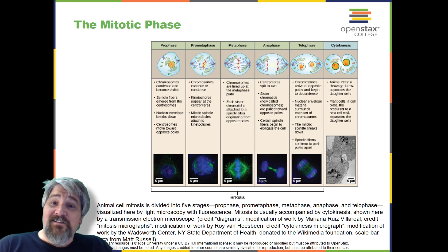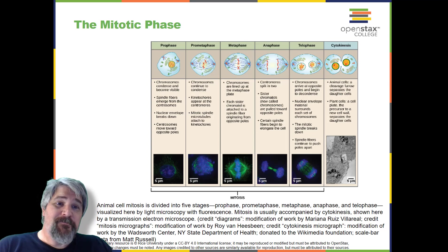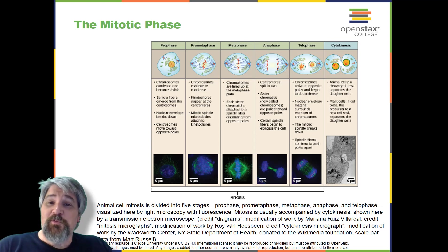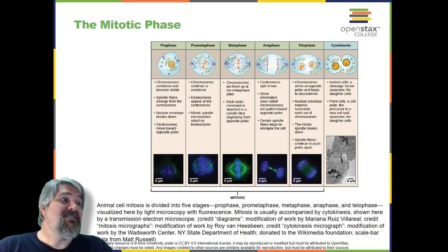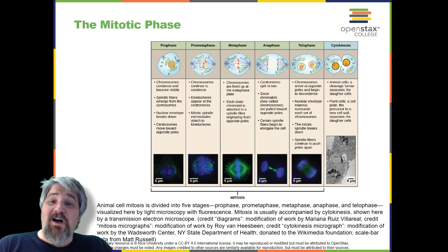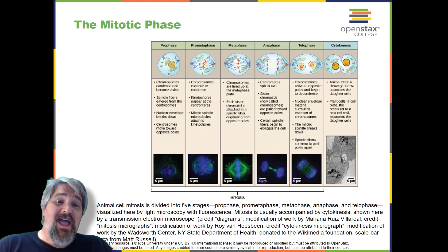During anaphase, the sister chromatids at the equatorial plane are split apart at the centromere. Each chromatid, now called a chromosome, is pulled rapidly towards the centrosome to which its microtubule was attached. The cell becomes visibly elongated as the non-kinetochore microtubules slide against each other at the metaphase plate where they overlap.